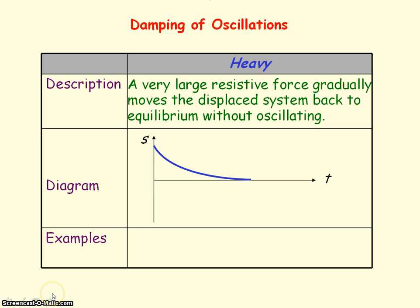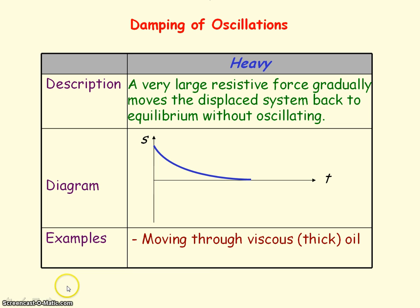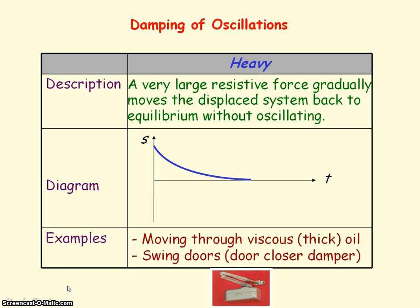An example of heavy damping would involve a system moving through very viscous thick oil. Another example is swing doors that have a door closer damper above them, which returns the swing door to its rest position without oscillating. It also returns it not too fast, so that it doesn't knock a person who is passing through it.